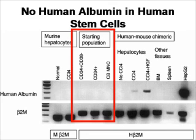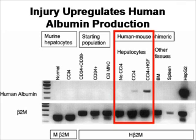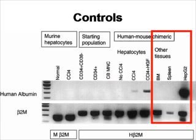When you look at the mice that have received the human stem cells: without carbon tetrachloride, there is no human albumin in the hepatocytes. If you give carbon tetrachloride, there is some human albumin expression, implying the human cells have differentiated into a type of cell producing human albumin. If you give carbon tetrachloride plus systemic levels of hepatocyte growth factor, you see a higher proportion of human albumin. As controls, mouse bone marrow or spleen show no human albumin, while the HepG2 cell line positive control shows a lot of human albumin.